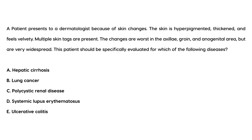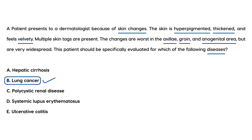Final question: A patient presents to a dermatologist with hyperpigmented, thickened, velvety skin and multiple skin tags. The changes are worst in the axilla, groin, and anal-genital area but are very widespread. This is a very similar question connecting the skin condition to an underlying medical condition — and of the choices listed, the most relevant to acanthosis nigricans is lung cancer.